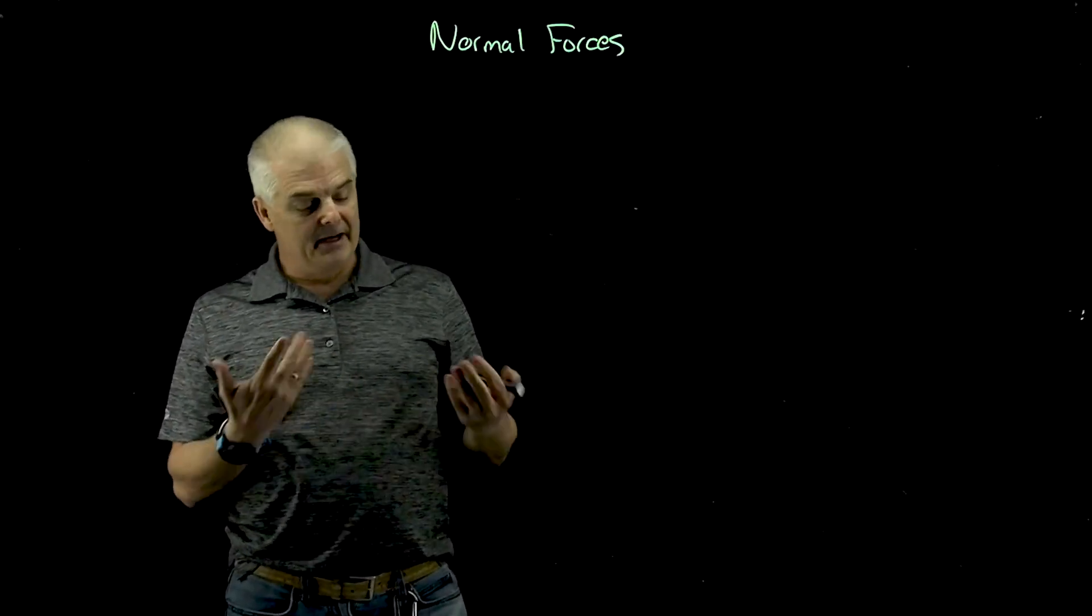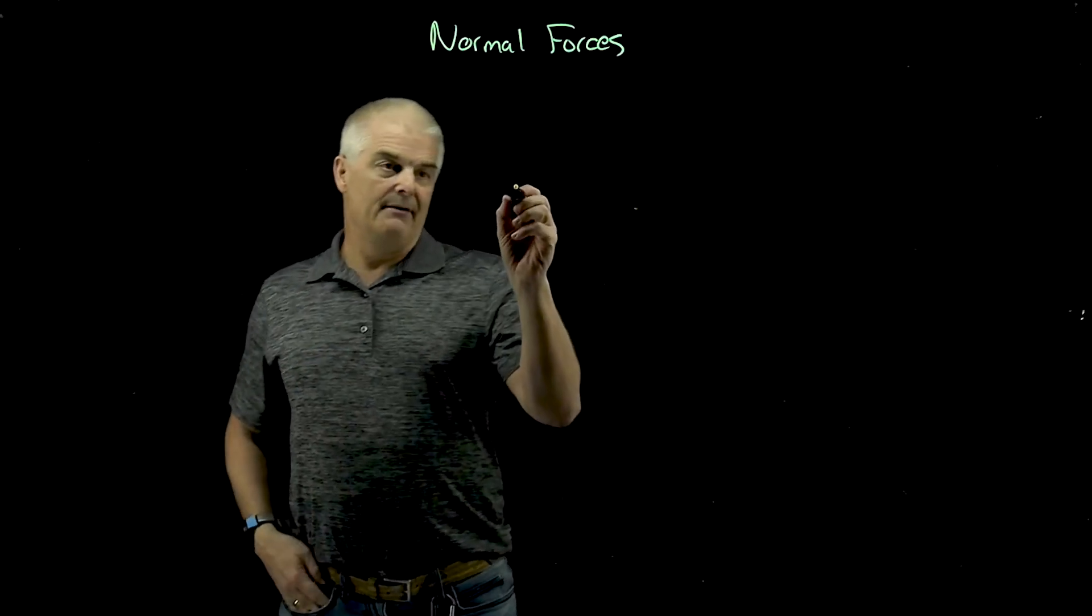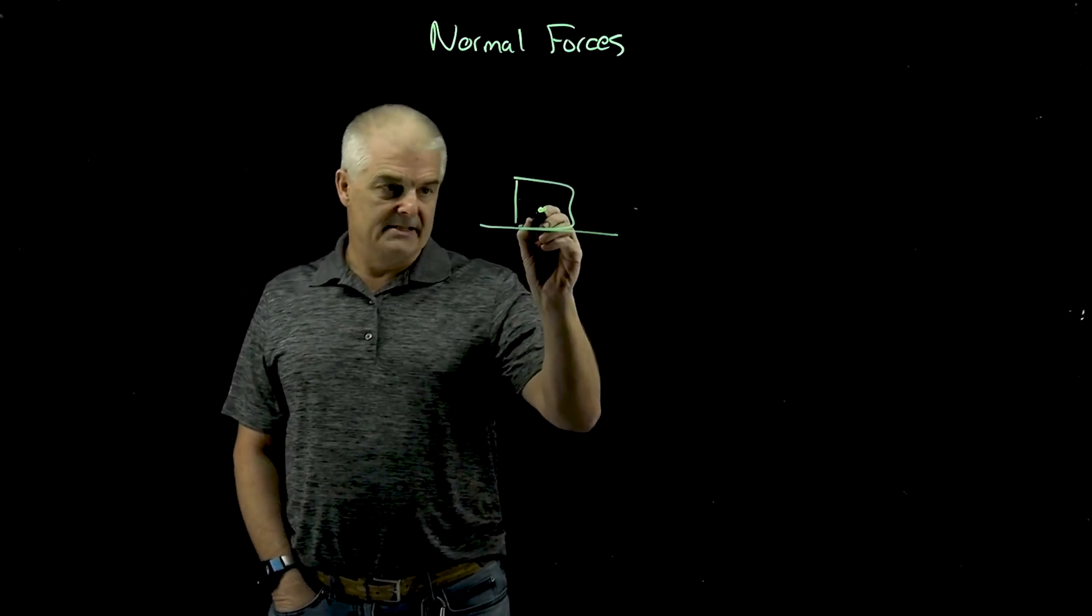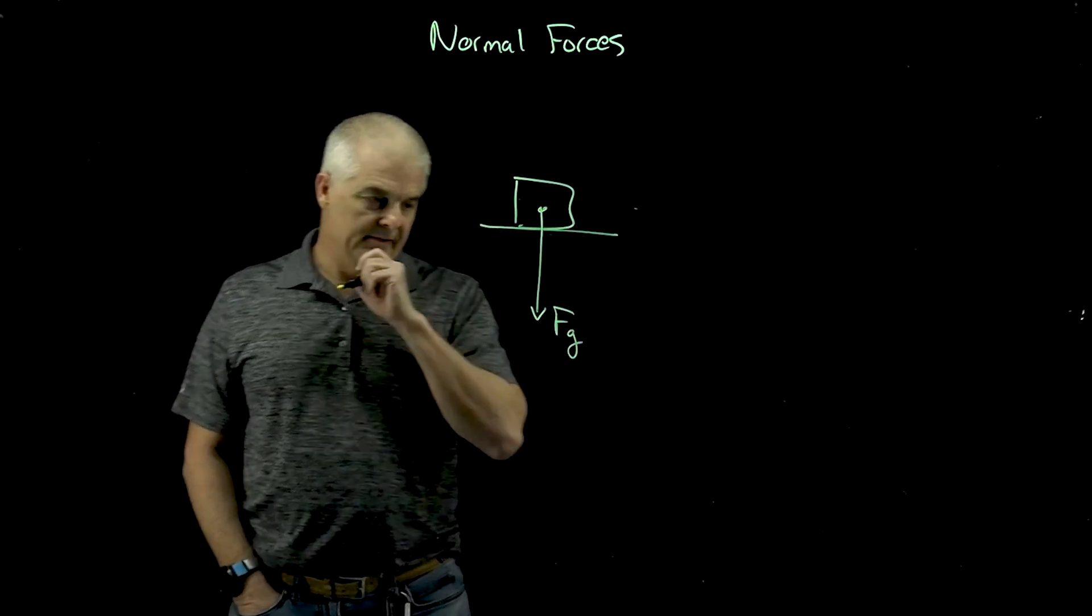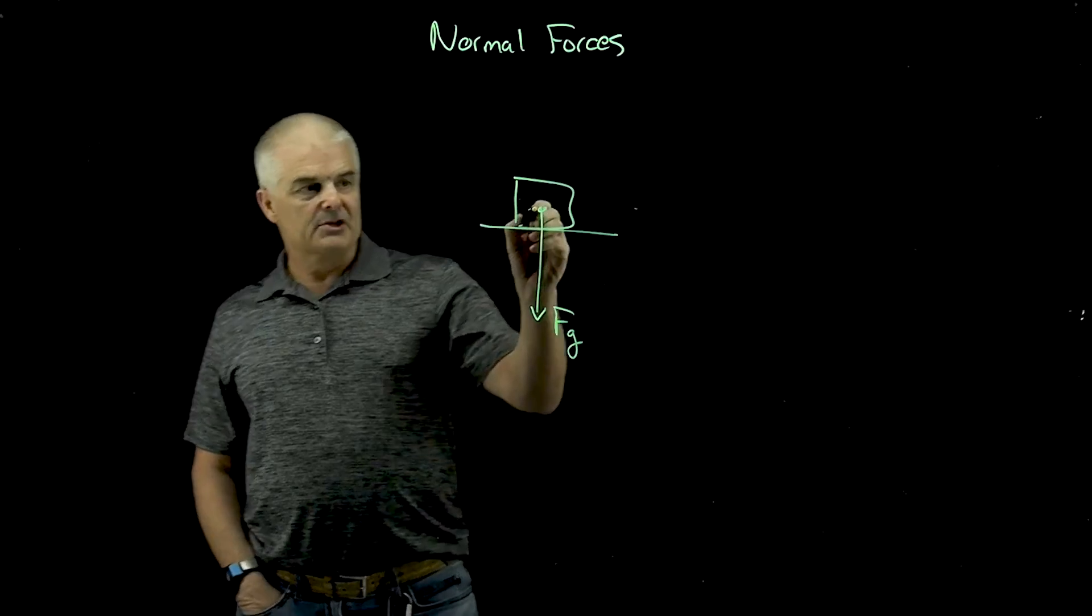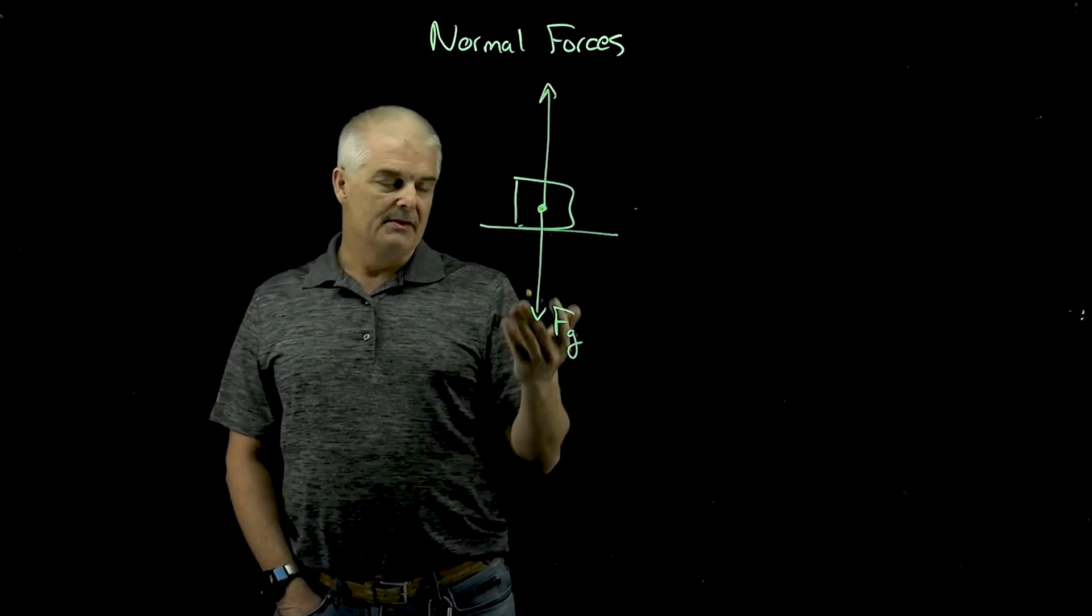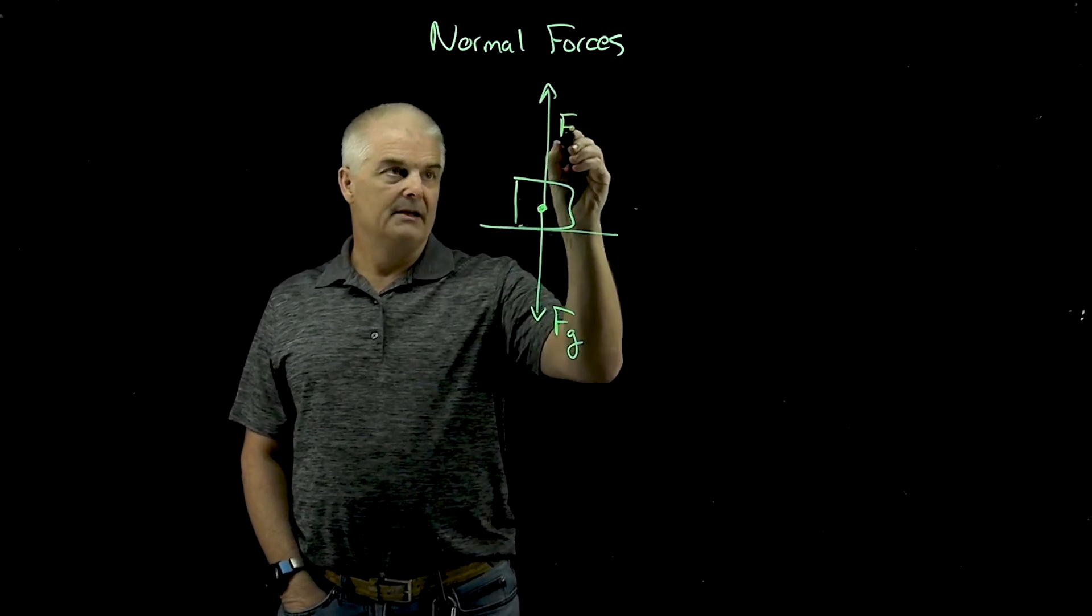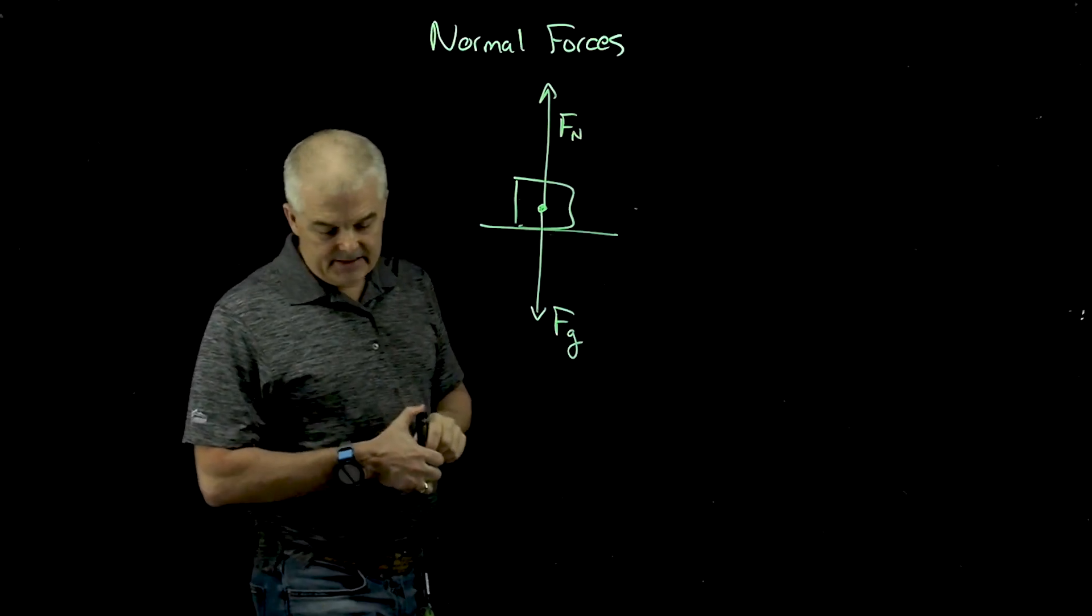What's actually happening is the table is pushing up. So if you have a box on a table, we know that pushing down on the box is the force of gravity. But since the box is not moving, there must be another force that's equal and opposite pushing up. We call that the normal force, or abbreviated F sub n.